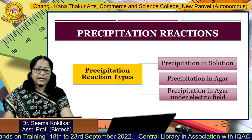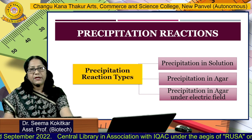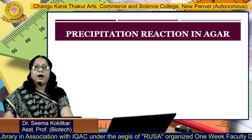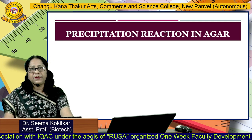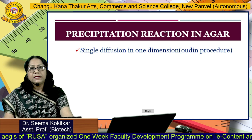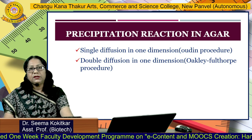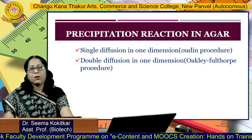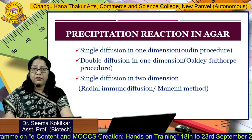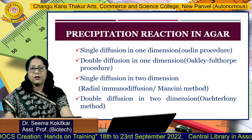There are different types of precipitation reactions. You can perform precipitation reactions in solution, in agar, or even using an electric field. I will be focusing on the type that happens in agar. These reactions may be of four types: single diffusion in one dimension, called the Oudin procedure; double diffusion in one dimension, called the Oakley-Fulthorpe method; single diffusion in two dimensions, popularly known as radial immunodiffusion or the Mancini method; and double diffusion in two dimensions, popularly called Ouchterlony's method.